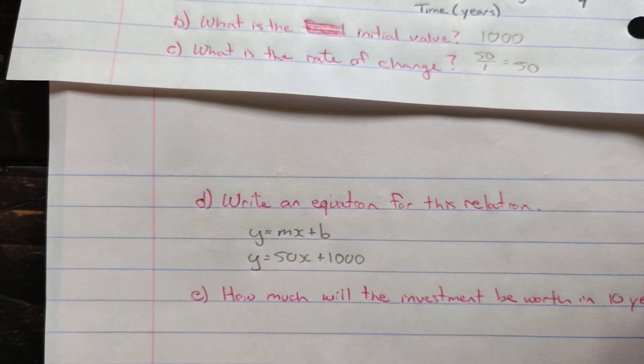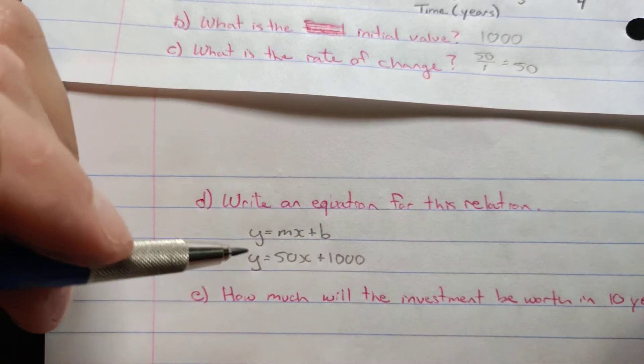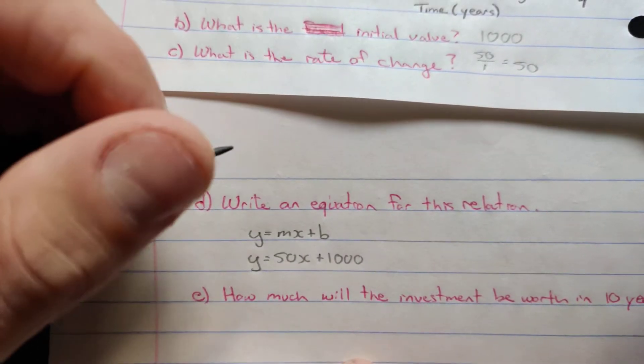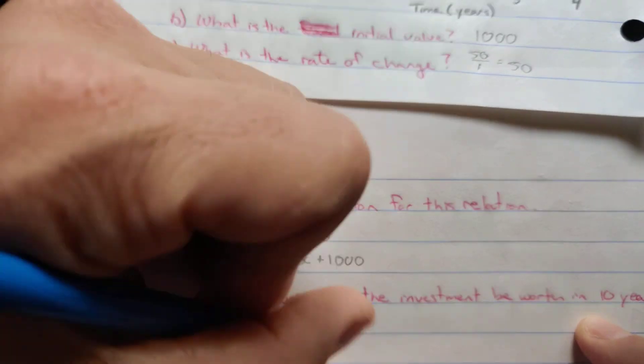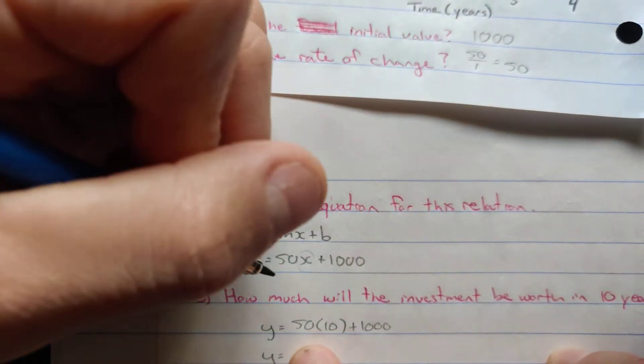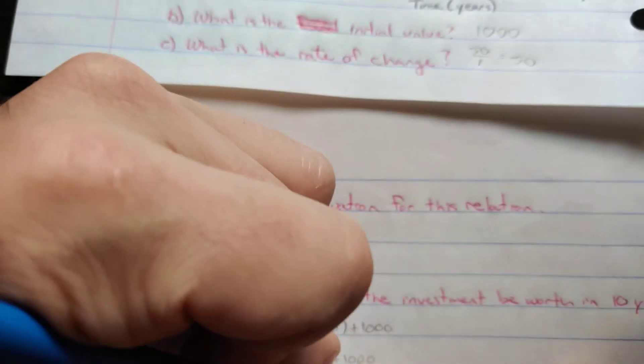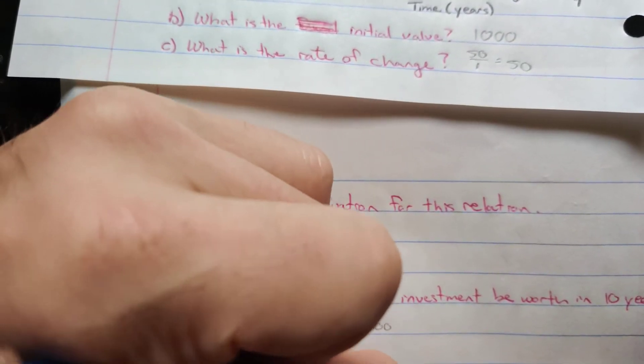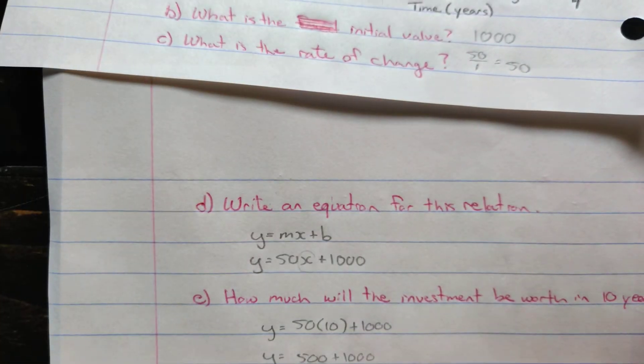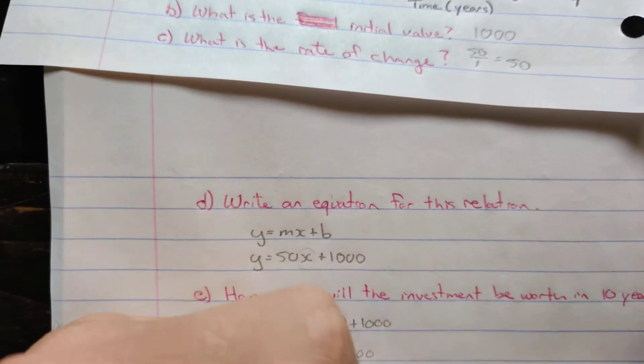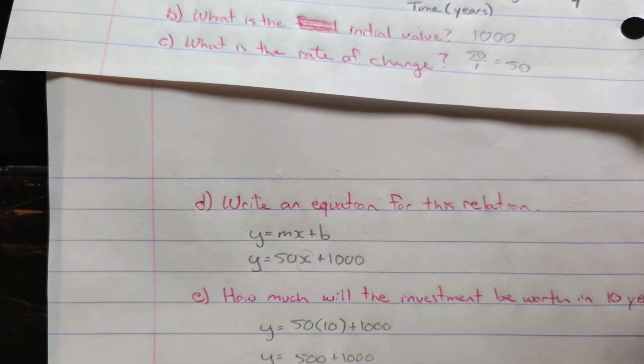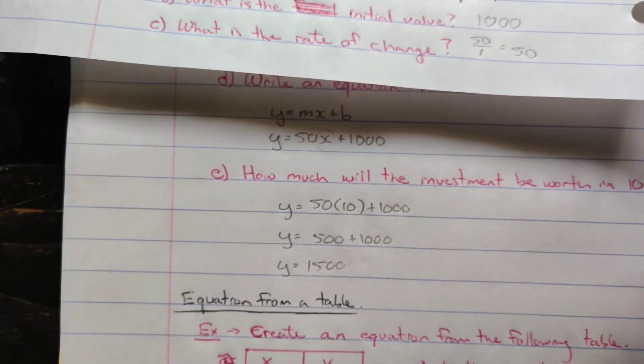How much will the investment be worth after 10 years? Well, now we can use that formula and plug in 10 years. The x values represented our number of years. So y equals 50 times 10 plus 1,000. 50 times 10 is 500. Add 1,000 to that, and we will get 1,500. So in 10 years, our investment will be worth $1,500. And there you are.